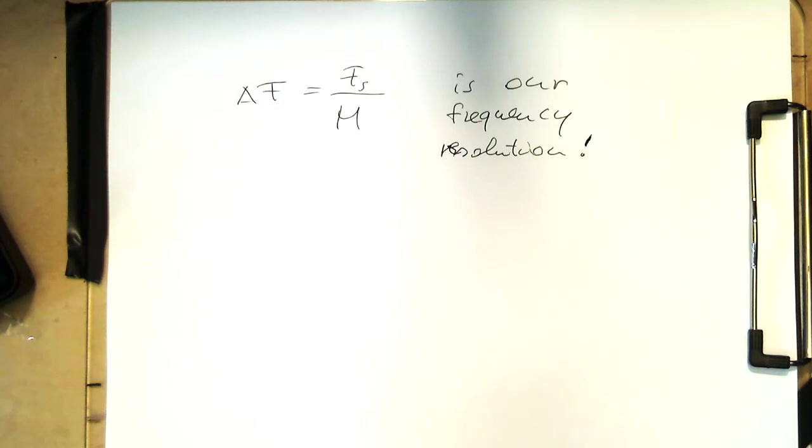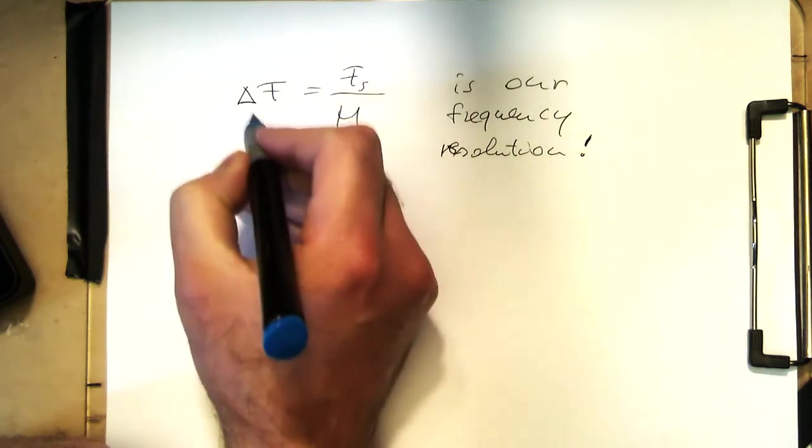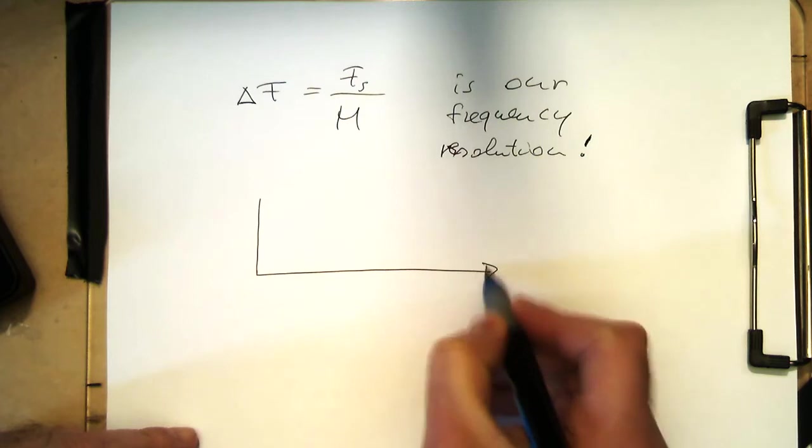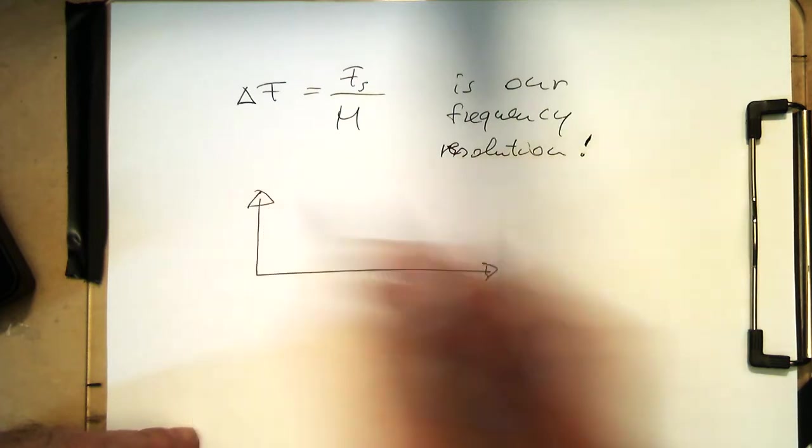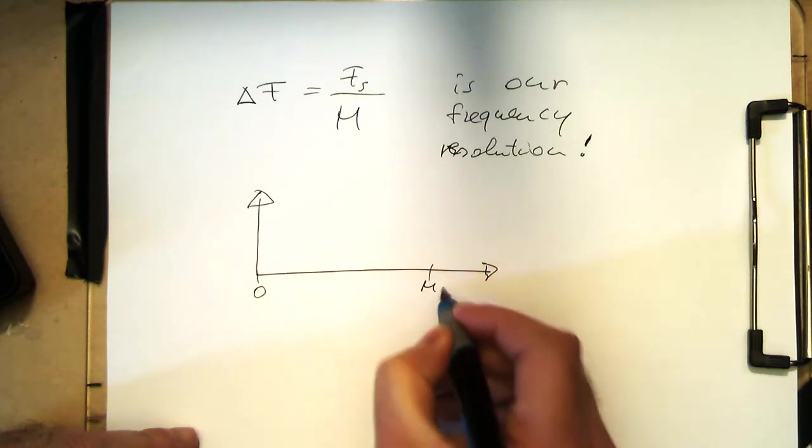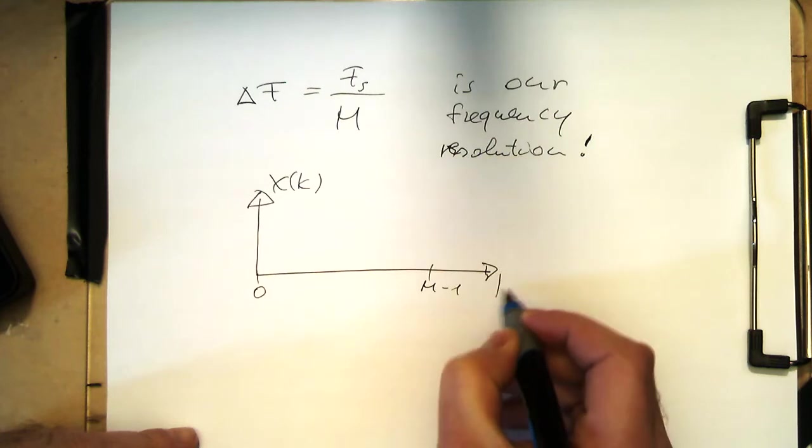Now, the thing is that this still means this is the best case scenario. So let's think of a frequency response. So therefore, if you have zero here, m minus one, that's an x of k, and that's our index k.